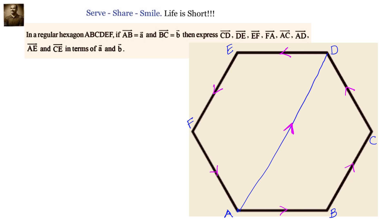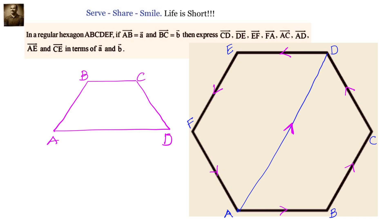To express CD vector, we first need to understand what AD vector is — specifically, what is the magnitude of AD. We have an isosceles trapezium here with AB, BC, CD all equal to the same length, let us say equal to X. Then AD will be 2X. To prove it, drop perpendiculars. Then we have one square and two 30-60-90 congruent triangles. So AD will be X plus X/2 from one triangle, plus X/2 from the other triangle, which equals 2X.